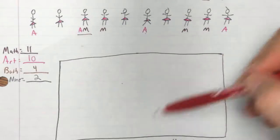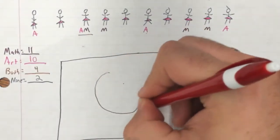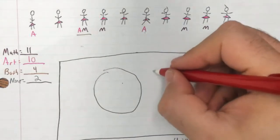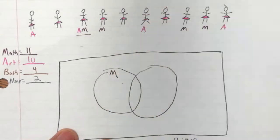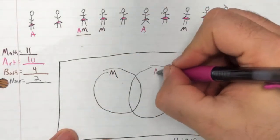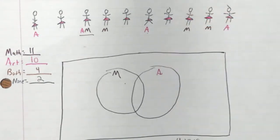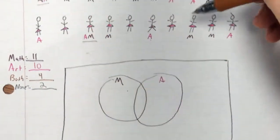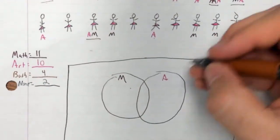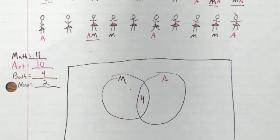So we're going to create a circle for math and a circle for art. This one is math, this one is art. Now the key to making these is that you want to always do the overlap first. So I've got four people, remember these four that were in both of them, so I've got four that are involved in both math and art classes.